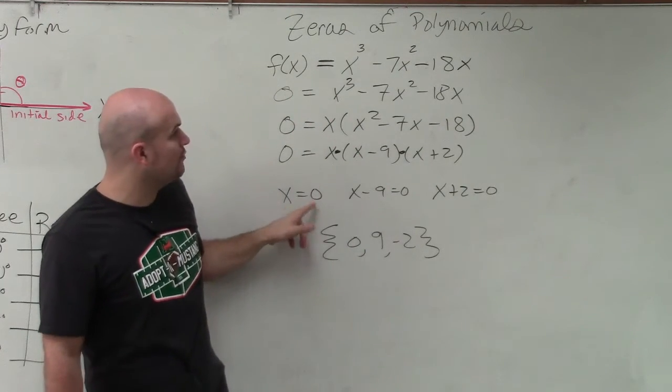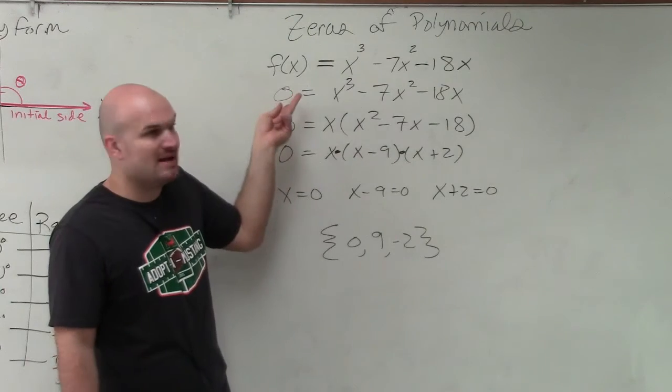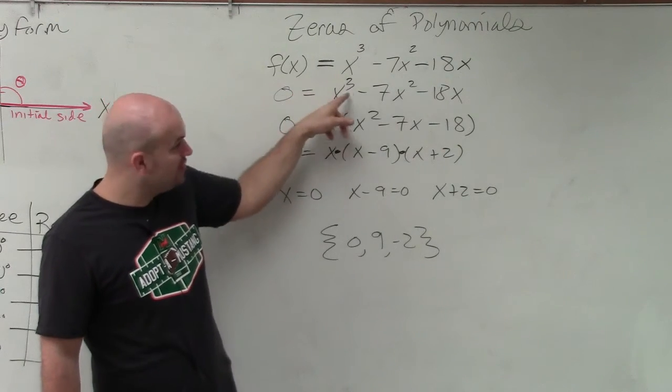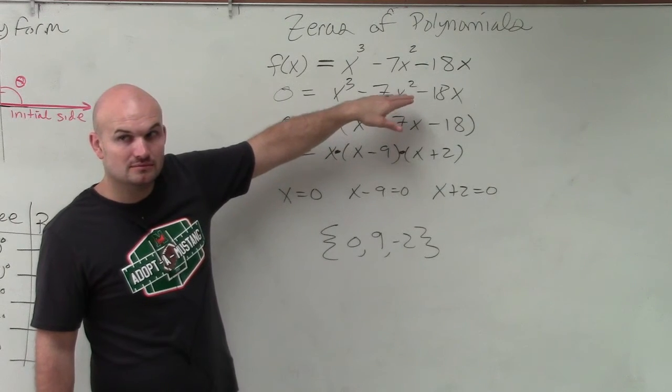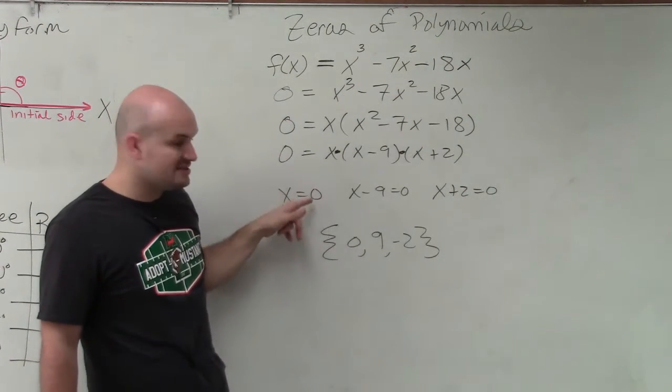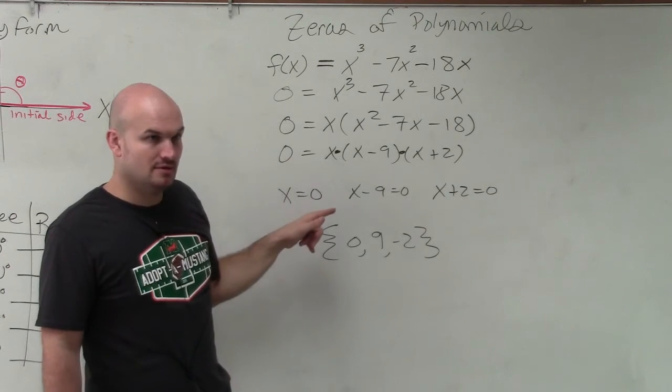Does the number 0, when we plug 0 in for x, does that make that 0? When you plug 0 in for x here, does it make the right side equal to 0? Yes. So therefore, 0 is a solution.